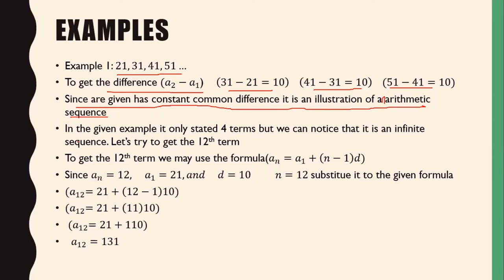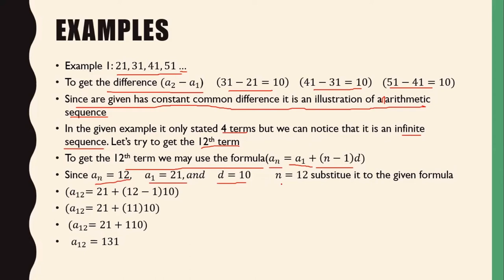In the given example, it only stated four terms, but we can notice that it is an infinite sequence because we have the ellipsis sign — the three dots — after 51. So let's try to get the 12th term. To get the 12th term, we use the formula a sub n equals a sub 1 plus the quantity of n minus 1 times d. Substituting: a sub n is 12, a sub 1 is 21, the common difference d is 10, and the number of terms n is 12.